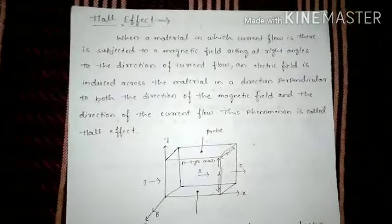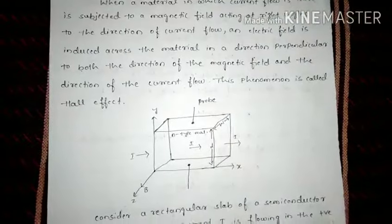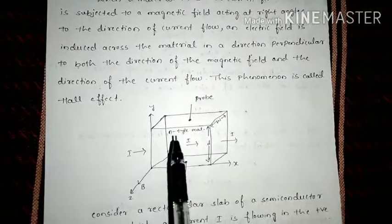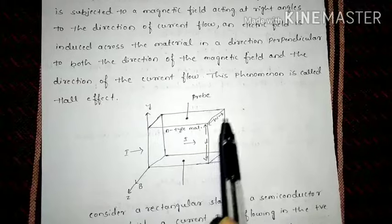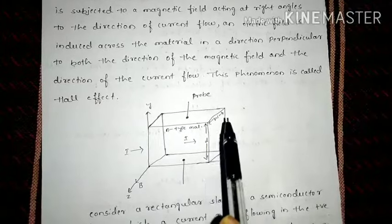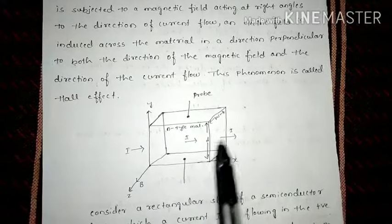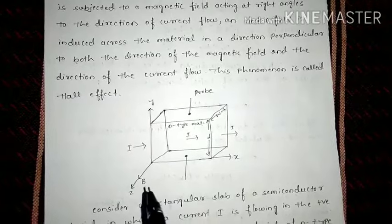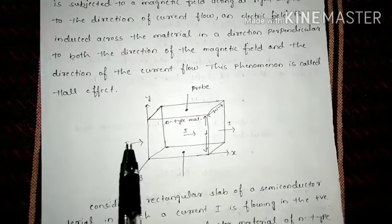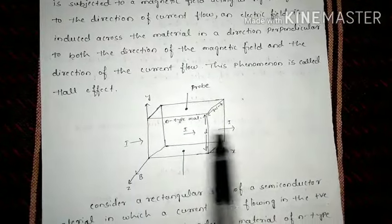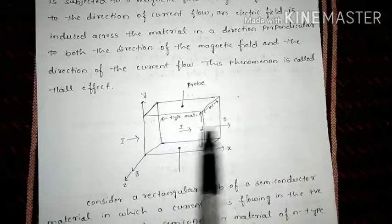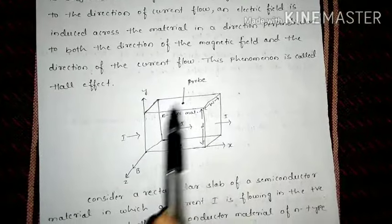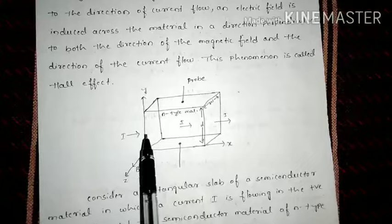Let me explain the Hall effect using this figure. This is an N-type semiconducting material which has a width W and thickness D. In this direction the current is flowing, and if you connect a voltmeter across this end and this end and measure, you will find a certain voltage.